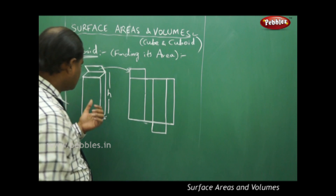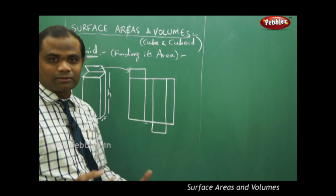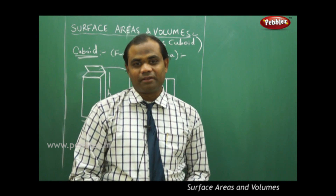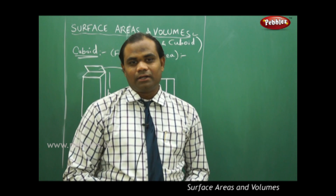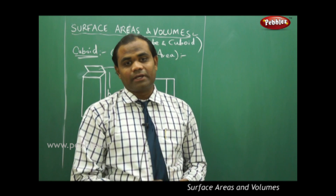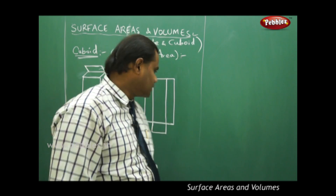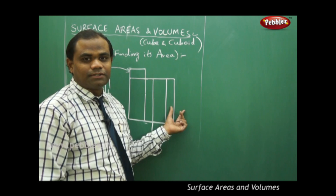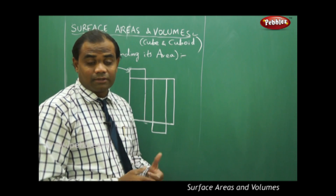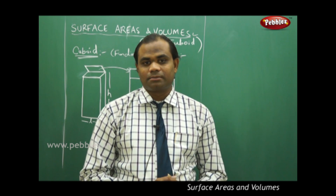Let's find the area of this cuboid by finding each of the areas of the individual faces, just as we did in two-dimensional plane figures like a quadrilateral or a survey of a field — we divided them into blocks, found each area, then summed them up to get the total area. Similarly, I will find the area of each region and sum them up to get the total surface area of the cuboid.